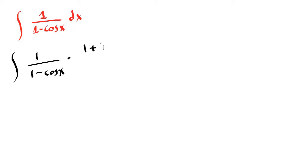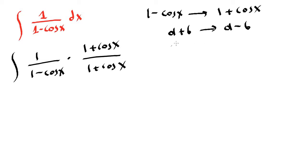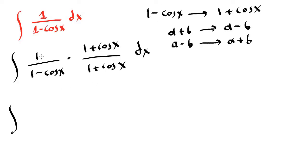...1 plus cosine x over 1 plus cosine x. The conjugate of 1 minus cosine x is 1 plus cosine x. The conjugate of an a plus b term is a minus b, or the conjugate of an a minus b term is a plus b — you just change the sign in between. So on top we obtain 1 times 1 plus...